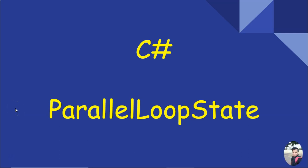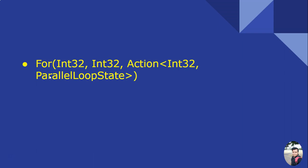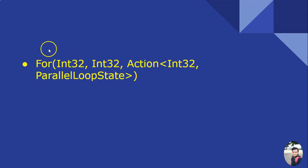Today we'll talk about C# Parallel Loop State object. In Parallel.For loop, the first parameter is the start index (inclusive), the second is the end index (exclusive), and the third is the action method. In the action method, we have the current index and the ParallelLoopState object. The Parallel class instantiates this object and passes it to each iteration.